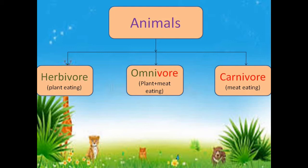So very quickly — animals are divided into three categories on the basis of their food eating habits. That is Herbivore, Omnivore, and Carnivore. Let's discuss each one of them in a little more detail.